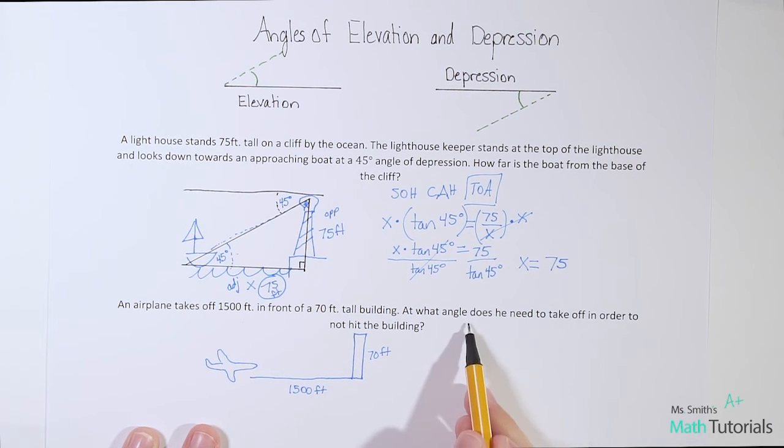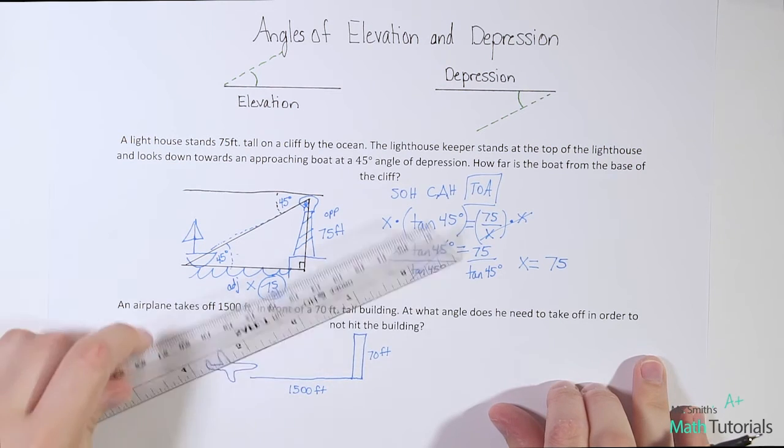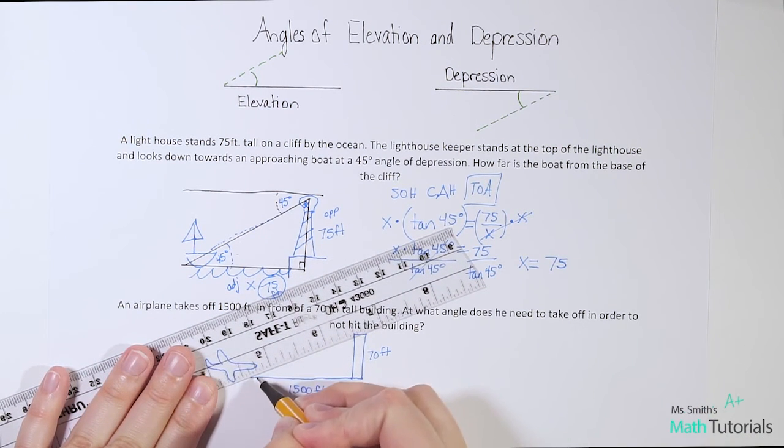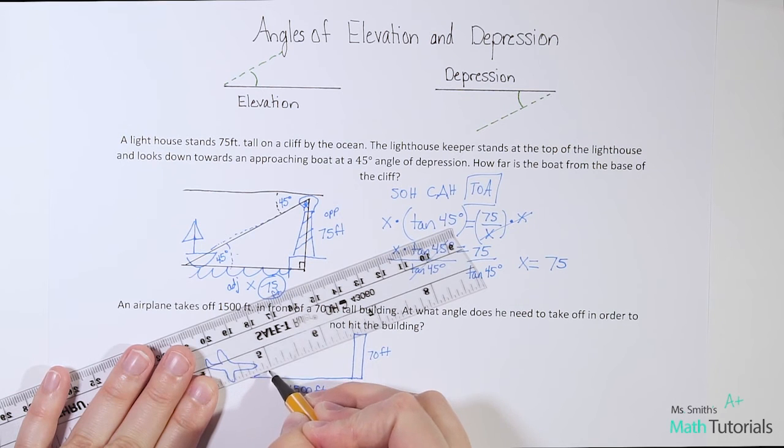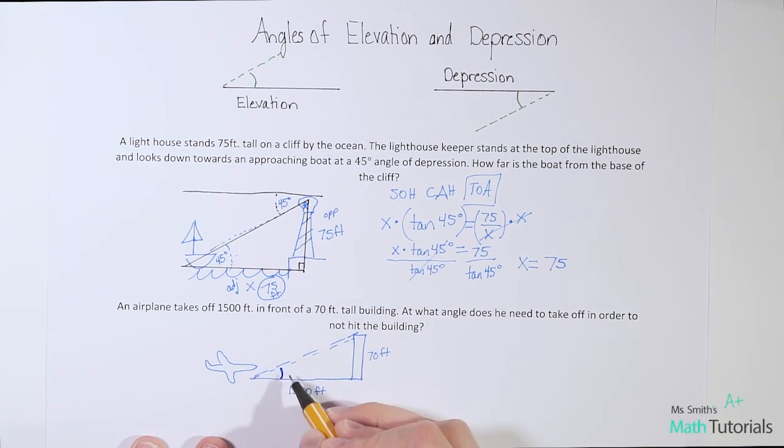I've got an airplane that is currently on the ground in front of a 70 foot tall building. This is 70 feet tall, and this is 1500 feet. At what angle does he need to take off in order to not hit the building? He's gonna drive for a little bit and at what angle does he need to take off? So I'm going to call this x. What is that angle x?